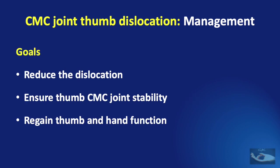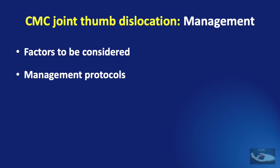The goals of management of carpometacarpal joint thumb dislocation are: to reduce the dislocation, ensure thumb carpometacarpal joint stability, and ultimately regain thumb and hand function. Before studying management, we need to first consider the relevant factors and then the management protocols.